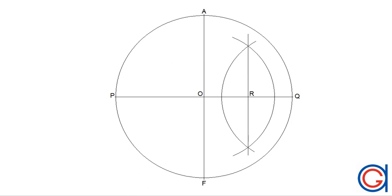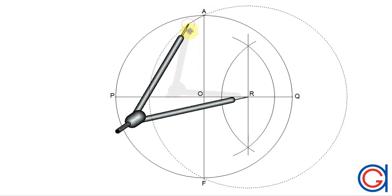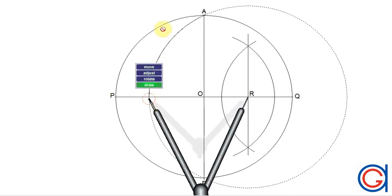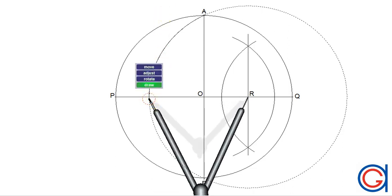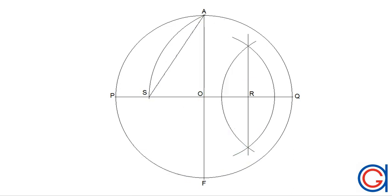Now with our compass centered on R and radius RA, we scribe an arc to the left until it cuts our horizontal diameter PQ. We will call this point S. Now we join point S to point A, and this line segment SA will be the length L5 of one side of the pentagon that we want to draw.